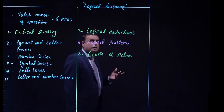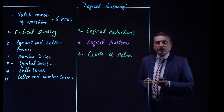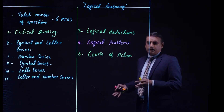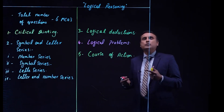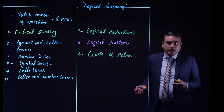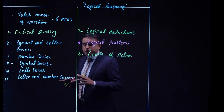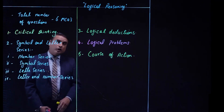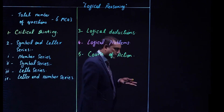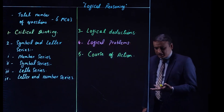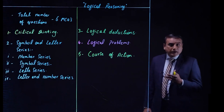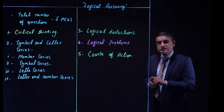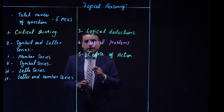Type five is course of action. A particular situation will be given to you and you will be required to tell what to do to correct that situation — what should be the corrective measures, what should be the corrective action to rectify the problem. This is comparatively easy.